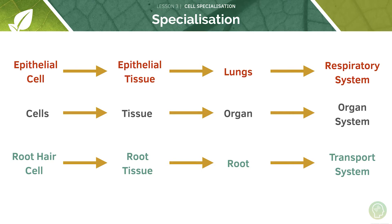Cells group together to form a team or a tissue. Multiple tissues form an organ, and many different organs work together to form an organ system. Let's look at the respiratory system as an example and perhaps work backwards from there. We know the respiratory system is formed mainly of the lungs.